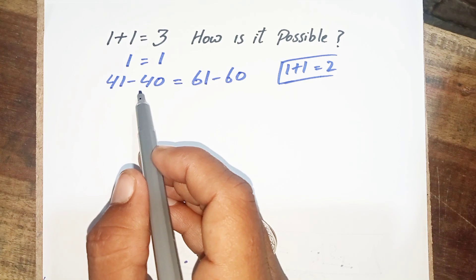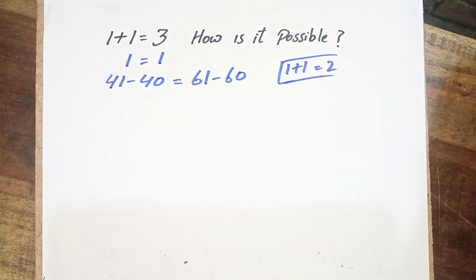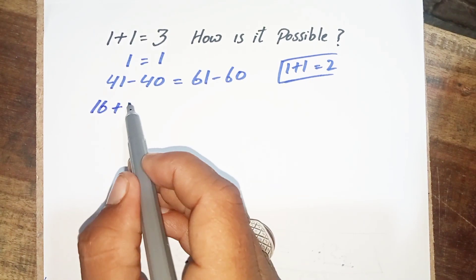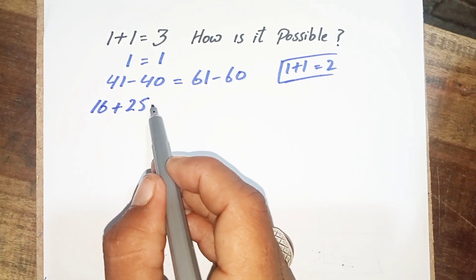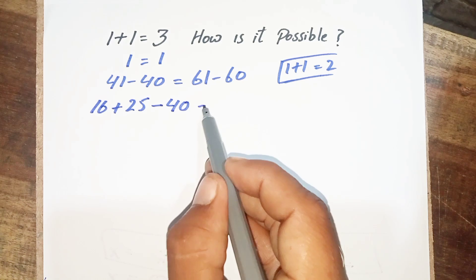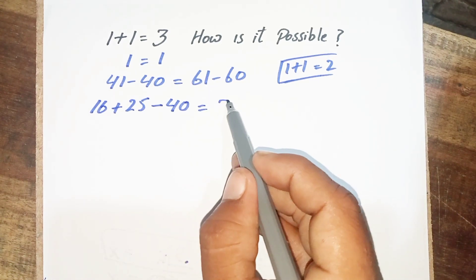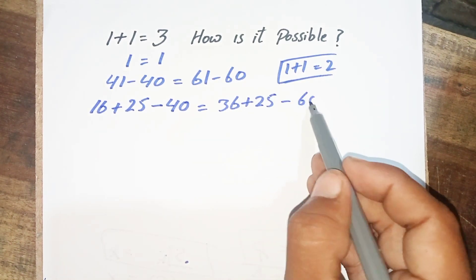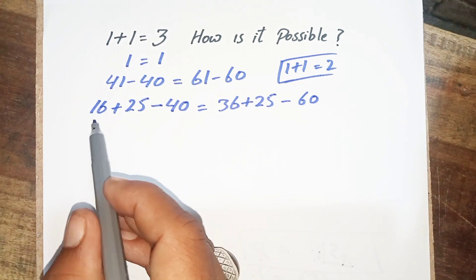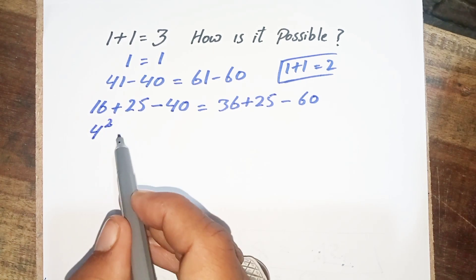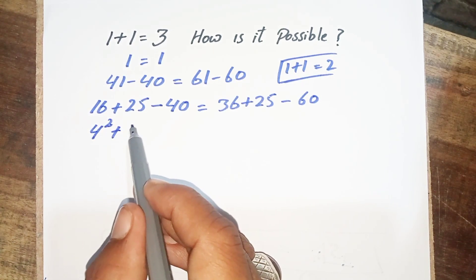There is no mathematical destruction in this lecture. Now this 41 I can write as 16 plus 25, and this minus remains, equal to 40. And this 61 will be written as 36 plus 25 minus 60.